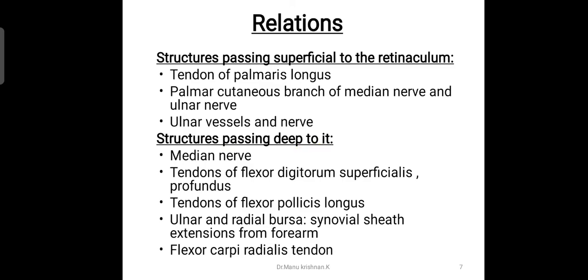The structures passing deep to the flexor retinaculum are the median nerve, the tendons of flexor digitorum superficialis and profundus, the tendon of flexor pollicis longus, and extensions of the synovial sheath — the ulnar and radial bursa — which are connective tissue coverings of the flexor compartment tendons extending into the palmar space. The flexor carpi radialis tendon passes through the small triangular tunnel formed by the deep slip and the flexor retinaculum above it.